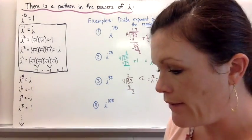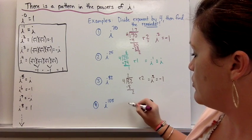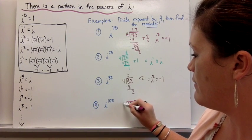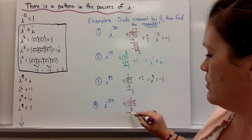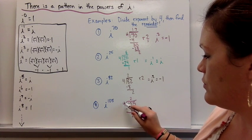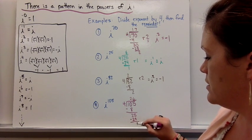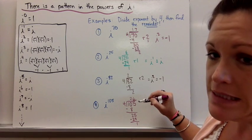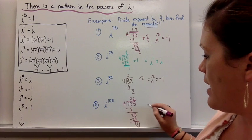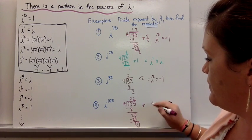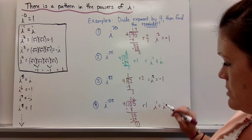We have one more example: i to the 105th power. Take 105 divided by 4. 4 divides into 10 two times; 2 times 4 is 8; subtract to get 25. 4 goes into 25 six times; 6 times 4 is 24; subtract and the remainder is 1. So i to the 105th power — the remainder was 1 when I divided by 4 — so the new exponent on i is 1, which is just i.